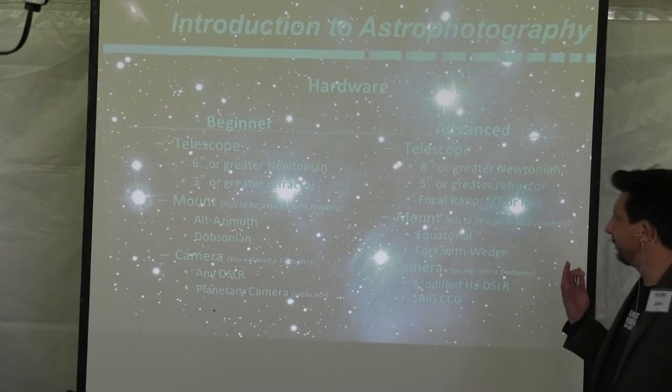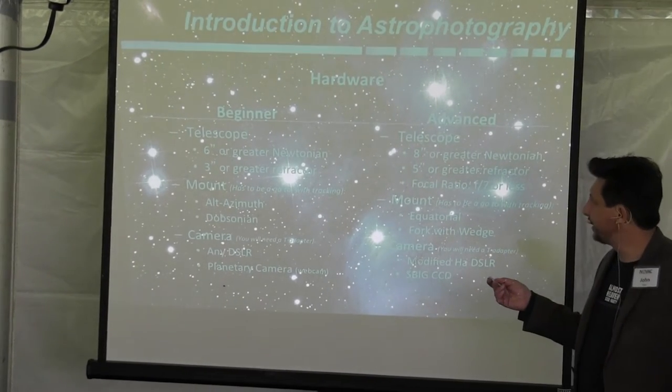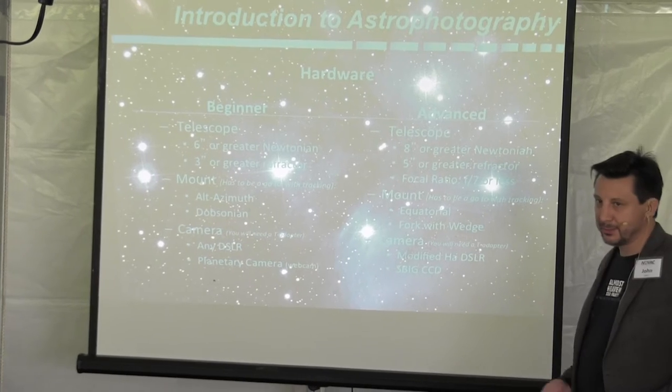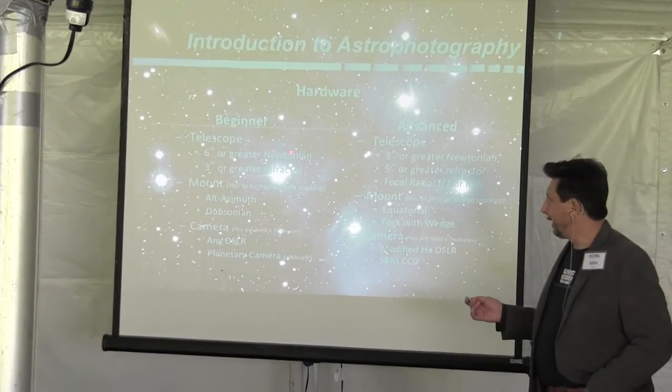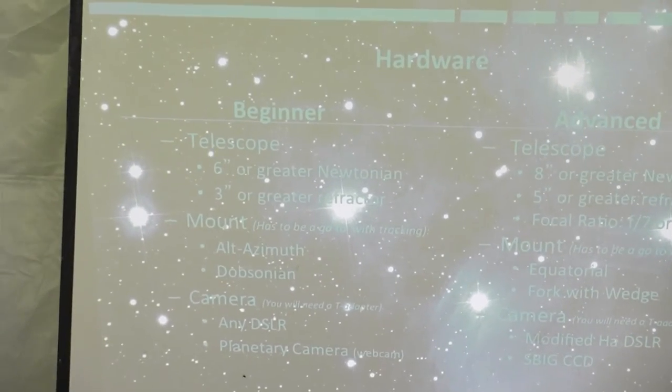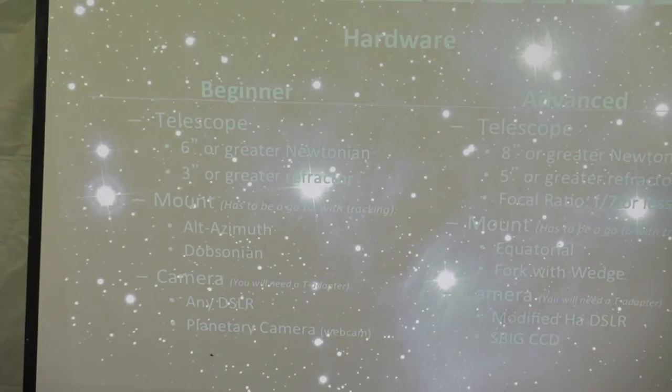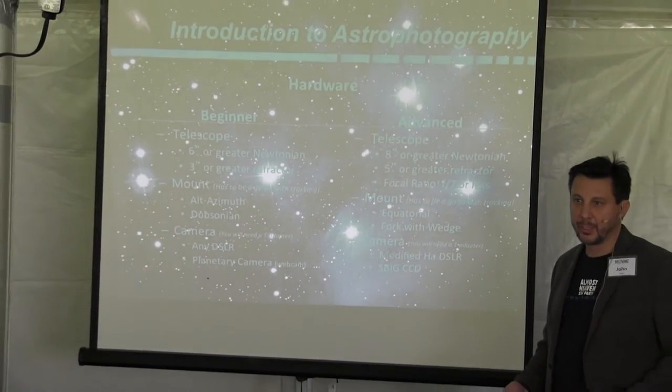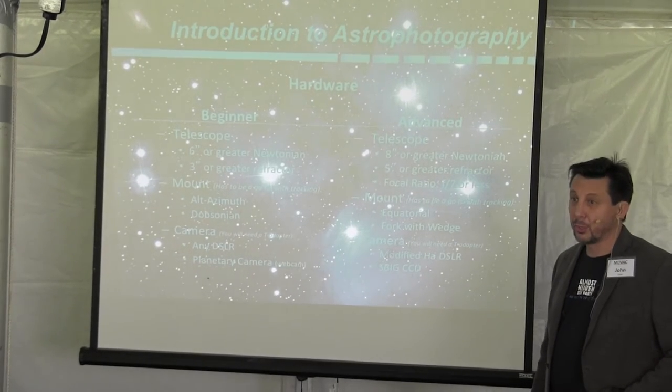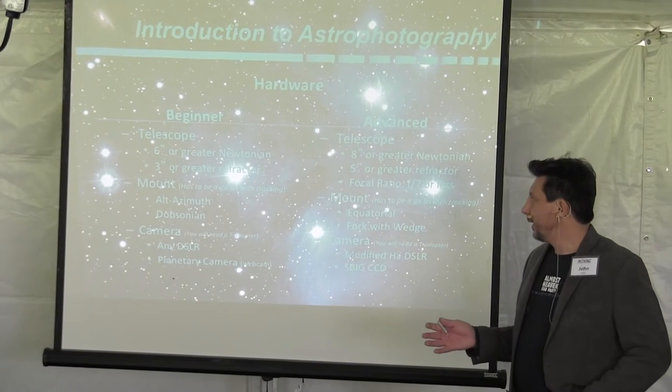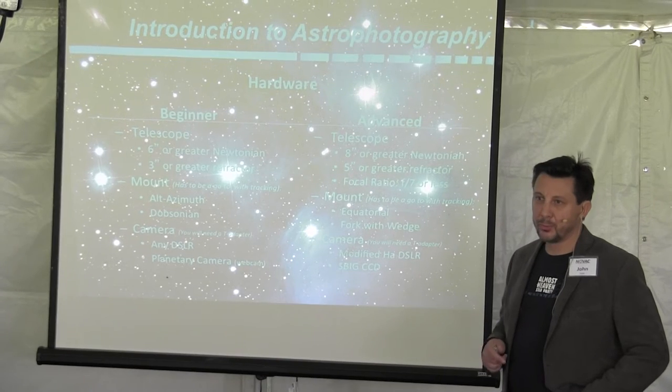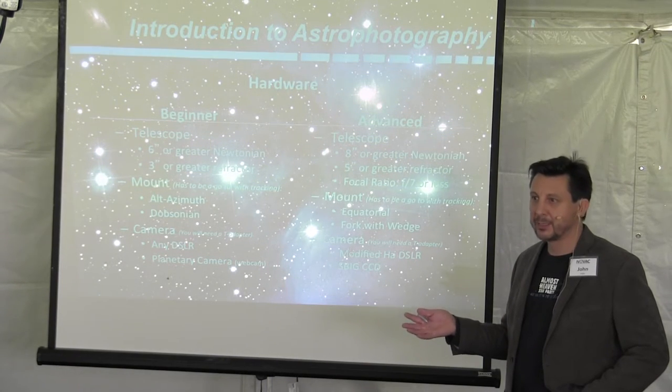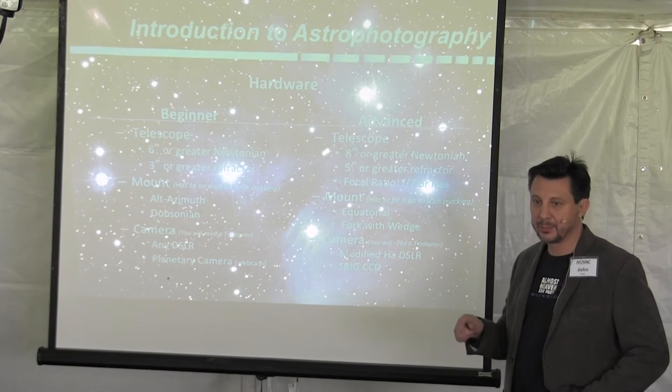So when it comes to the hardware, I broke this out by beginner and advanced. This beginner section is probably going to get you started somewhere in the 2 to 3K range, where advanced is going to be upward of $10,000 by the time you're all done. If you want to start, you're going to want a 6-inch Newtonian or greater.